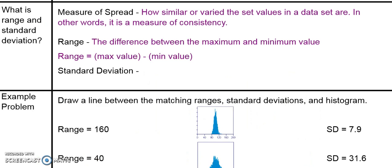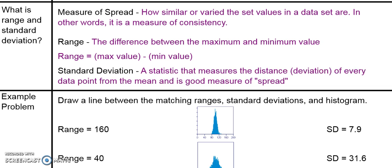The second way we can measure spread is called the standard deviation. The standard deviation is a statistic that measures the distance or deviation of every data point from the mean, and is typically a good measure of spread. Remember, the range only looks at the maximum and minimum values, but the standard deviation looks at every data point. A larger standard deviation means the data is more spread out and less consistent, while a smaller standard deviation means the data is clumped together, more consistent, and less spread out.